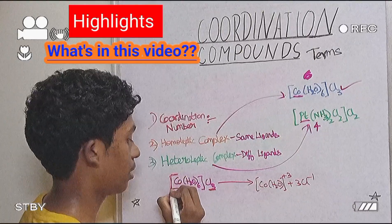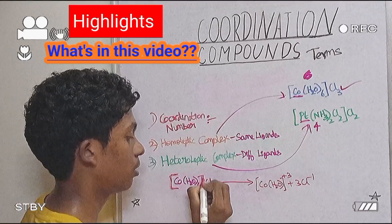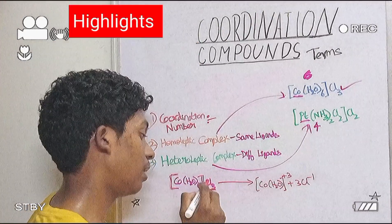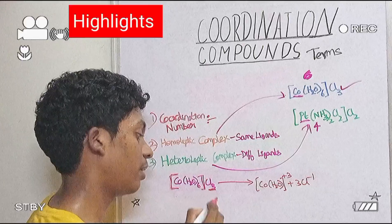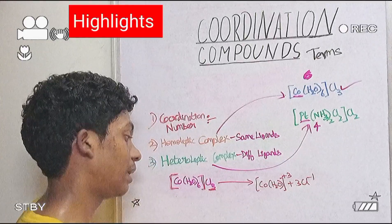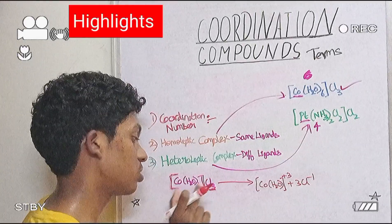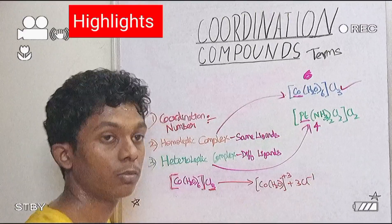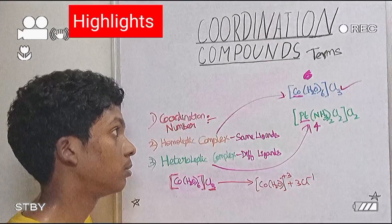In this square bracket, this is the Coordination Sphere. It's called the Ionization Sphere. The Coordination Sphere and Ionization Sphere will be separated.